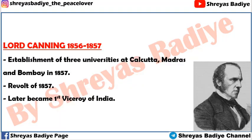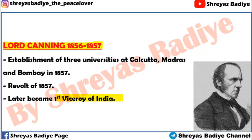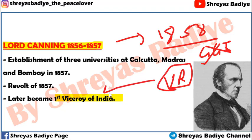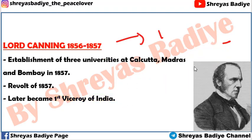After Dalhousie, the last Governor General of India was Lord Canning, who is also called the first Viceroy of India. Lord Canning served as Governor General from 1856 to 1857, and after that, under the Government of India Act of 1858, the post of Governor General of India was replaced by the post of Viceroy. So Lord Canning became the first Viceroy of India.